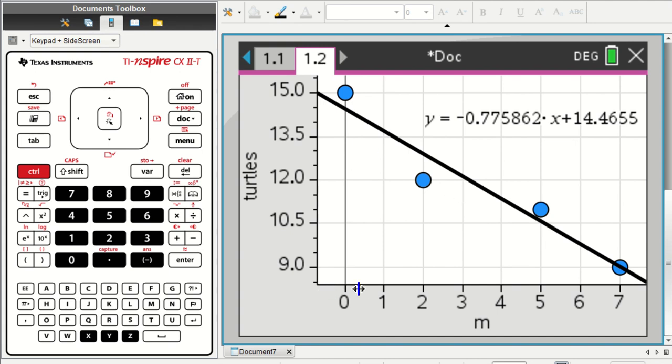So over time, zero to seven minutes, the number of turtles sitting on a log has gone down, and we added the trend line.